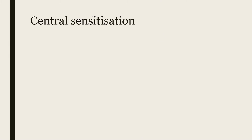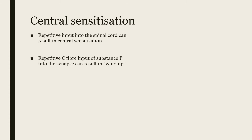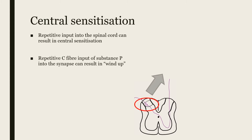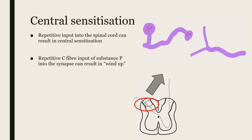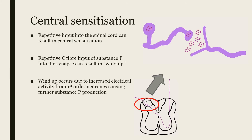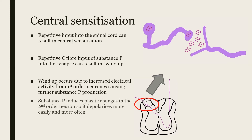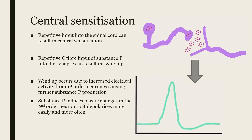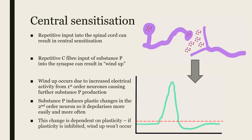As well as in the periphery, sensitization can also occur centrally. Repetitive input into the spinal cord can result in central sensitization. Particularly, repetitive C-fibre input of substance P into the synapse can result in what is called windup. Windup occurs due to increased electrical activity from the peripheral first-order nociceptive neurons, causing further substance P production and release into the synapse between the first-order neuron and the second-order neuron. This substance P induces plastic changes in the second-order neuron, so it depolarizes more often and more easily. This change is dependent on plasticity — if plasticity is inhibited, this windup mechanism will not occur.